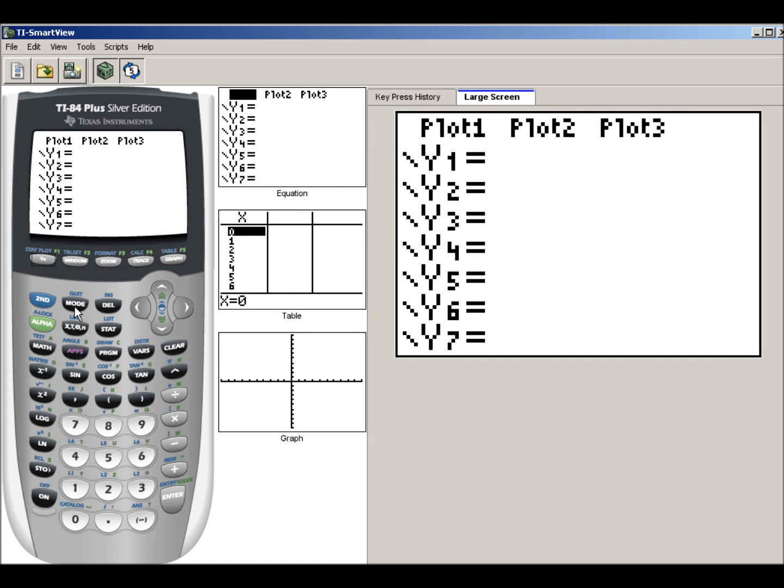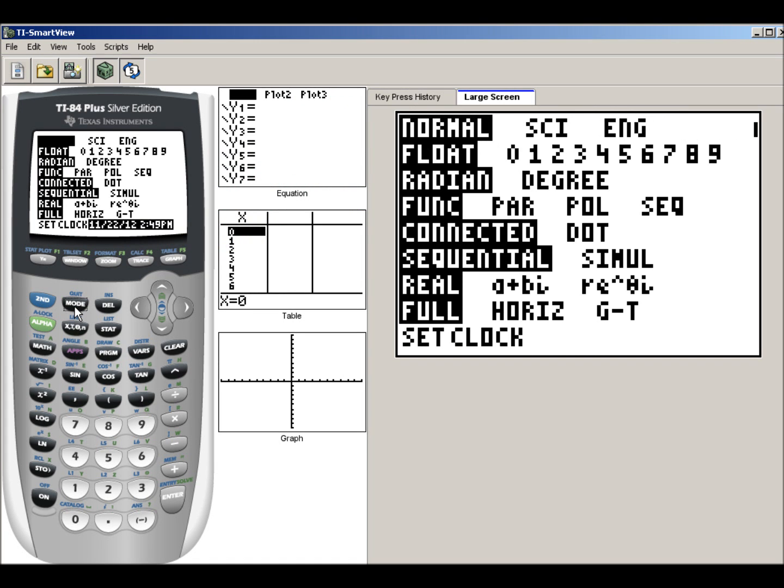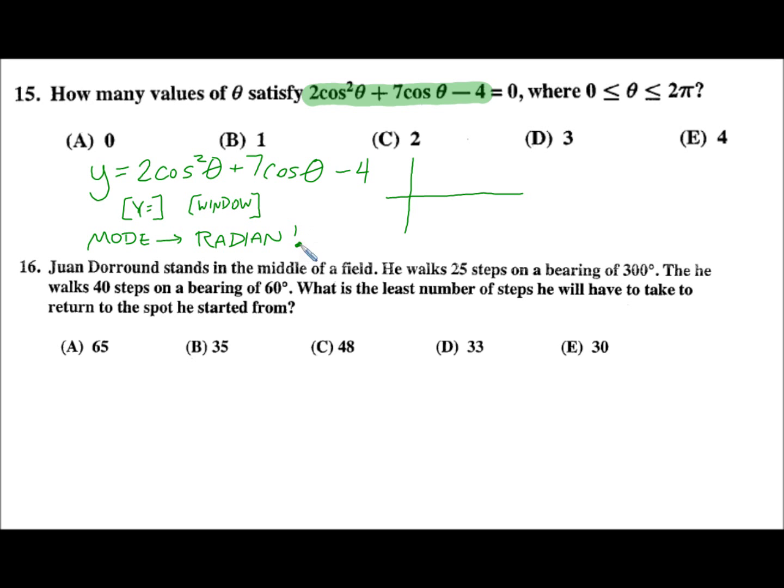Actually, before I go into y equals, if you go to the mode, let's make sure that we're set to radians in this problem, and that step is very important. Because it says theta between 0 and 2 pi, we know that it's expressing in radians. When it says anything in terms of pi referring to an angle, it is in radians.